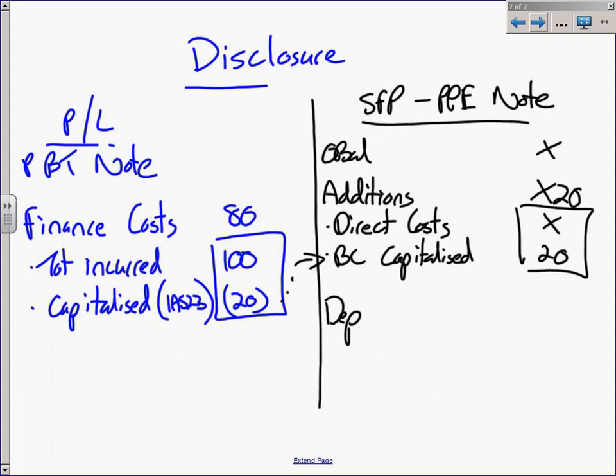Just remember that your depreciation will then be based on this total times by a rate, and you will get your depreciation. So the borrowing costs capitalized as part of the additions, and therefore will increase your depreciation expense. Great, that's IAS 23 done and dusted. Let's do one or two examples quickly to get a feel for it.